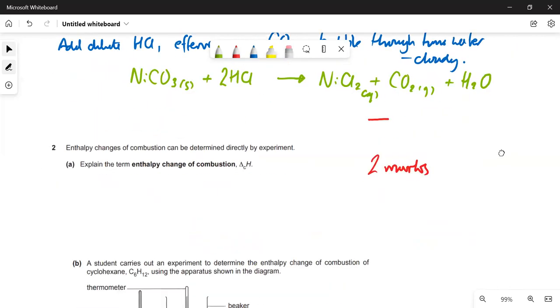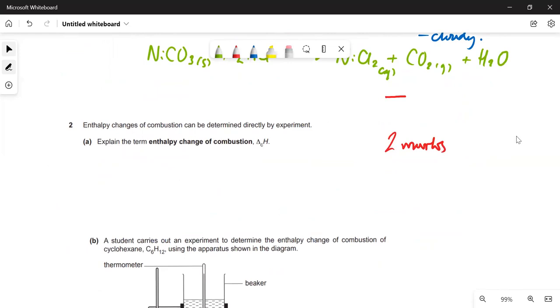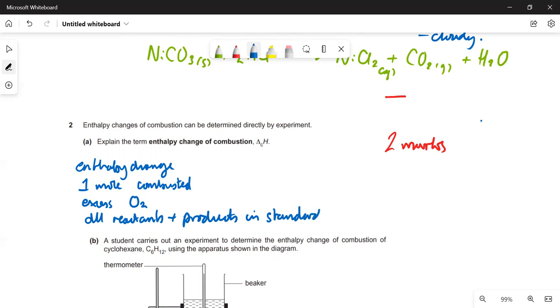We've got an enthalpy of combustion calculation here. What is the enthalpy change of combustion? It's the enthalpy change when you burn one mole in excess oxygen, so you're getting complete combustion. We're going to say all reactants and products in their standard state.